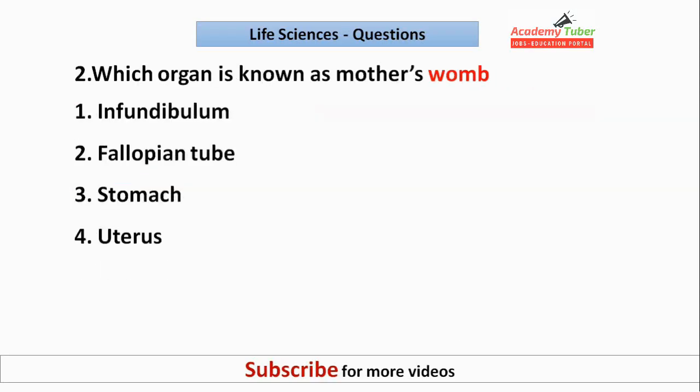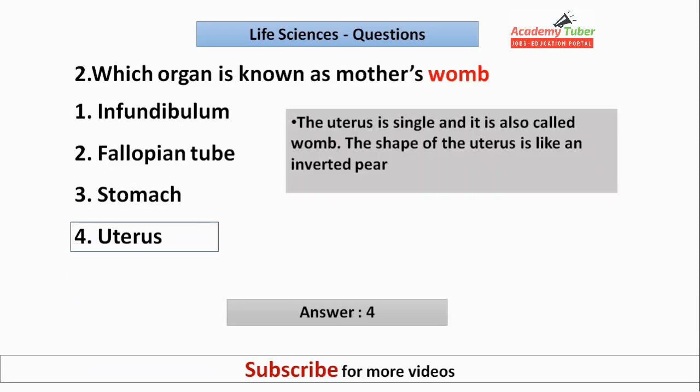Which organ is known as the mother's womb? The answer is the uterus. The uterus is single and is also called the womb. The shape of the uterus is like an inverted pear.